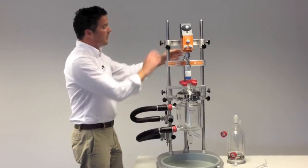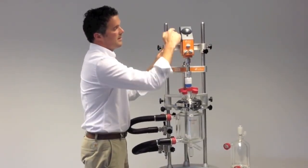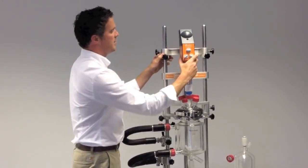At the top of the framework is the I-beam supporting the overhead stirrer. This is Radleys overhead stirrer, but they'll accept most major overhead stirrers.